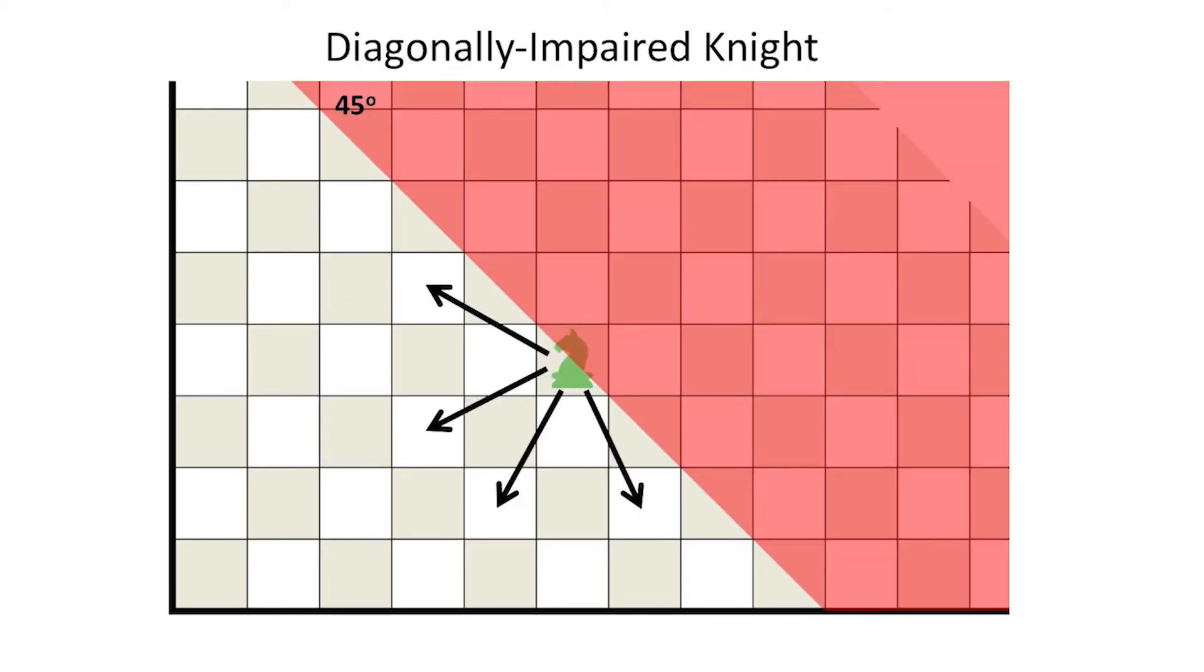Here's the diagonally impaired knight. He can move to a location in his west-north-west, west-south-west, south-south-west, or south-south-east.